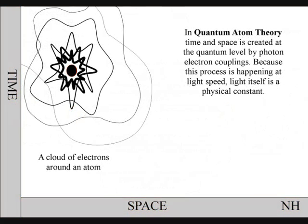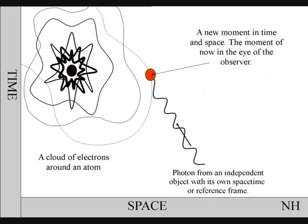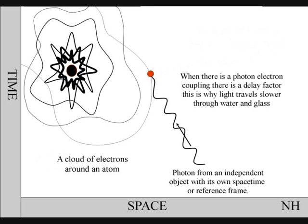In this diagram of an atom, a photon expands through space as a wave-particle function of light. When it makes contact with the electrons on the surface of the atom, the wave function will collapse into a new photon particle and into a new moment in time and space. When there is a photon-electron coupling, there is a delay factor. This is why light travels slower through glass and water.